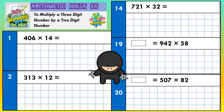The first thing we're going to do is set this out in a column method. You actually need five lines of squares for each question. The first two lines are for writing your question, so I'm going to write 406 times by 14. Then you need another three lines for your working out. When you're doing this in your exam, you would actually have more squares than what I've got here.